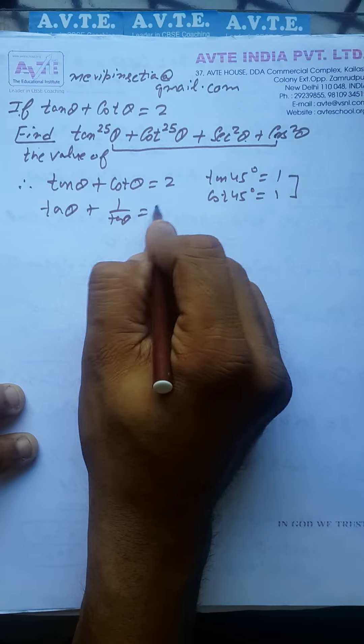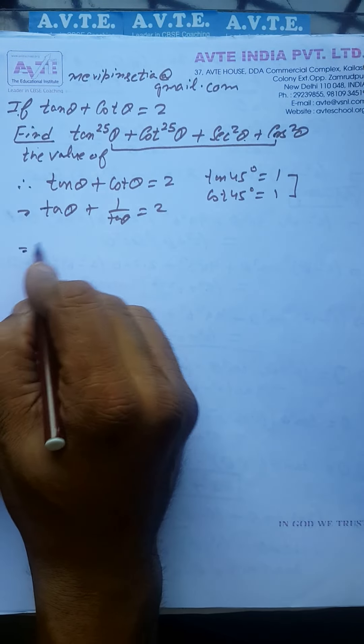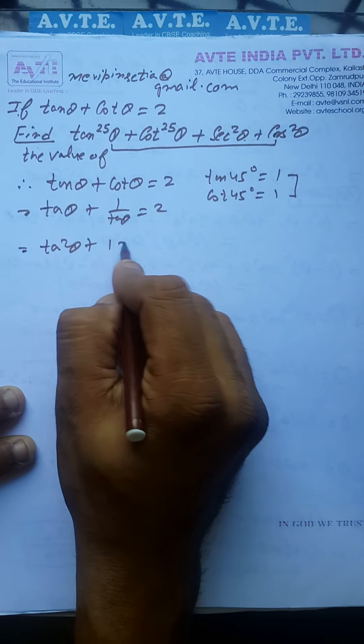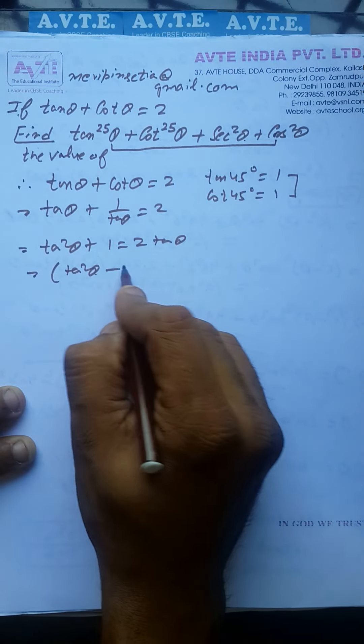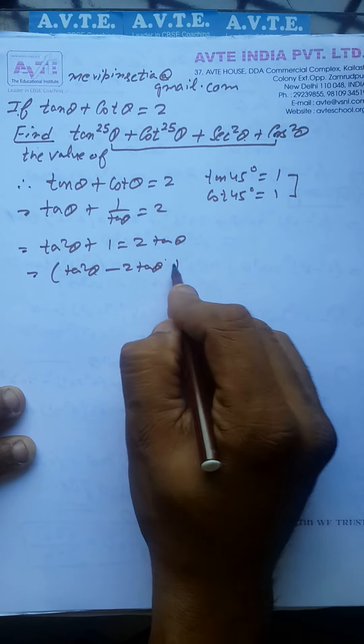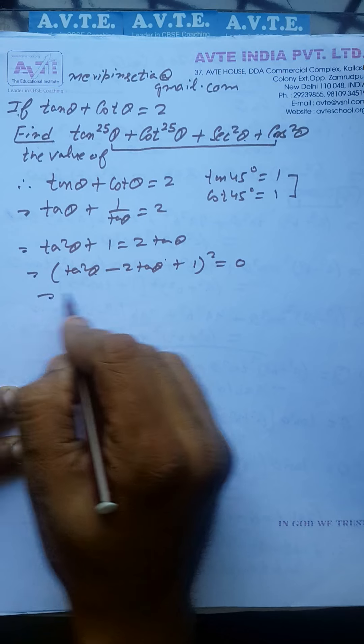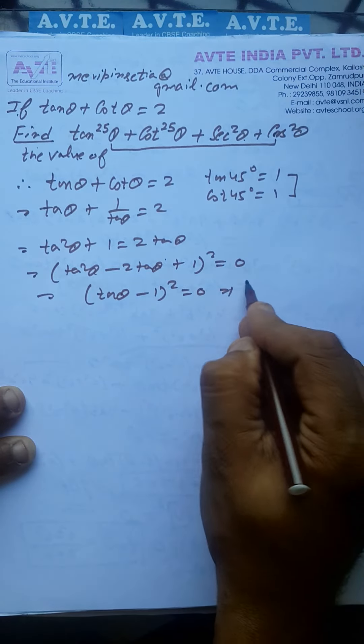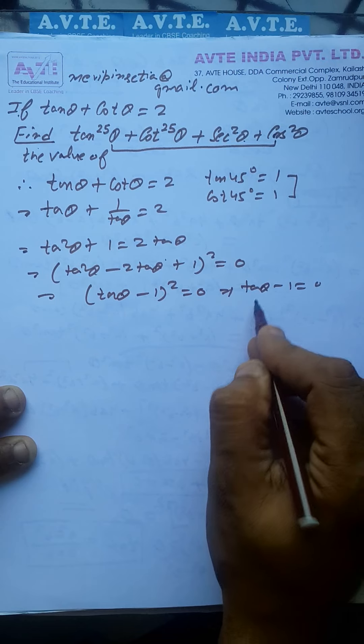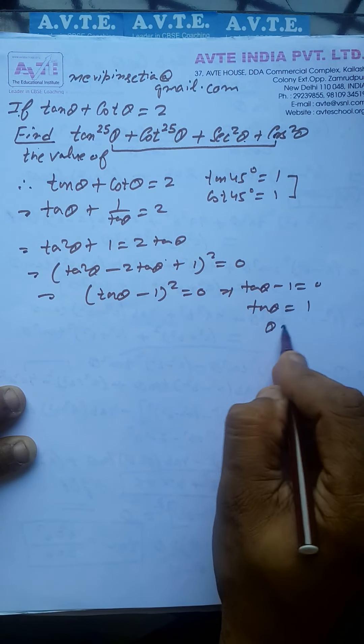tan theta plus 1/tan theta equals 2. This means tan^2 theta plus 1 equals 2 tan theta, or tan^2 theta minus 2 tan theta plus 1 equals 0. It becomes (tan theta minus 1)^2, so tan theta minus 1 equals 0. Therefore tan theta equals 1, and theta equals 45 degrees.